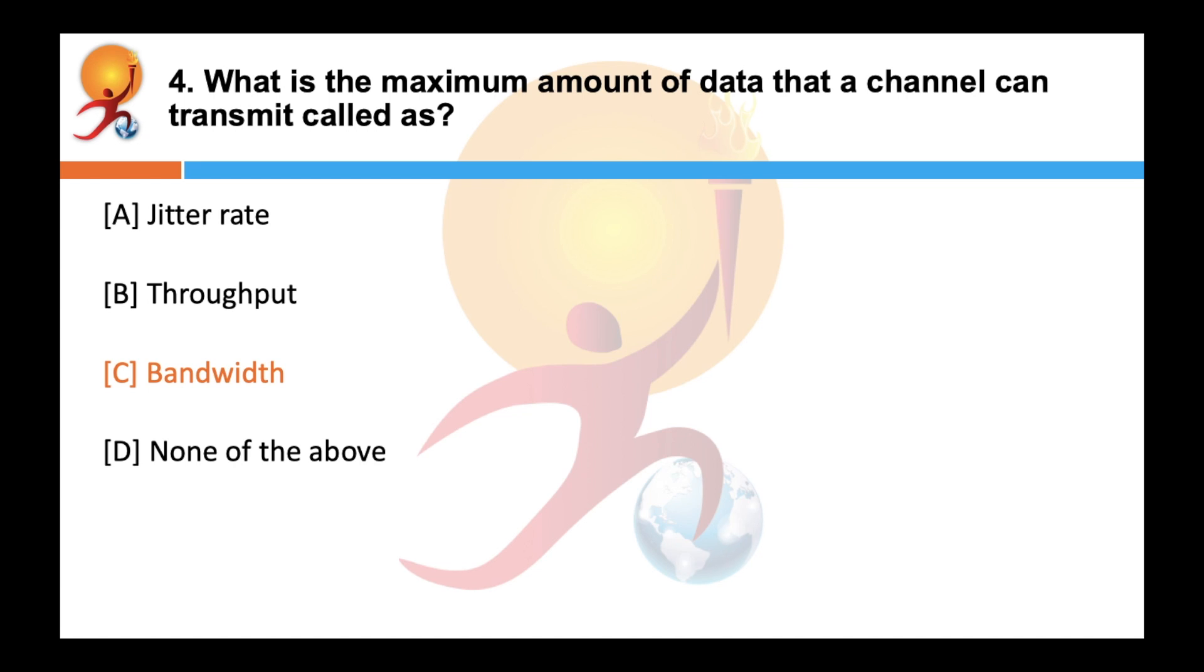For example, if the bandwidth of a fast Ethernet network is a maximum of 100 Mbps, then the network can send 100 Mbps or less depending on various factors. Whereas if it is transmitting less than 100 Mbps, something around 80 or 90, then that is the throughput.